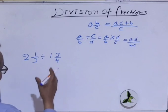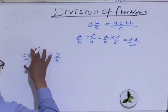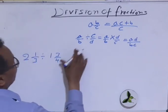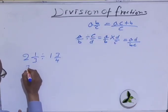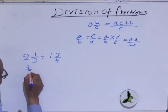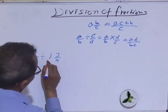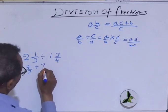First step is to convert this one to improper fraction. We'll do it this way: 2 times 3 is 6, plus 1 is 7, so 7 over 3. Divide 1 times 4 is 4, plus 3 is 7, so 7 over 4.